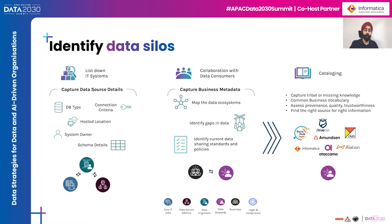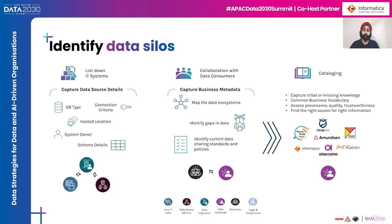In parallel, data stewards are discussing with business to map business needs to the core IT systems. They interact and ask how teams occasionally get hold of data — whether from an Excel file over email, a CSV, or a front-end application download. This helps data stewards map the business data to the right source system. All of this information is critical, because data stewards are also looking at what the best policies are for using this data.